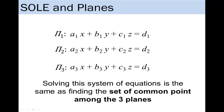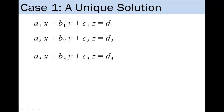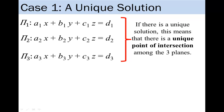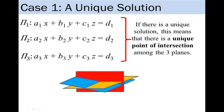Let us go further and consider each case of different number of solutions. In case 1, suppose that the system of linear equations has a unique solution. Thinking of the three equations as planes, this means that there is a unique point of intersection among the three planes. This can be illustrated in how the planes are oriented in the diagram below. Notice that in the diagram, the three planes intersect at exactly one point.